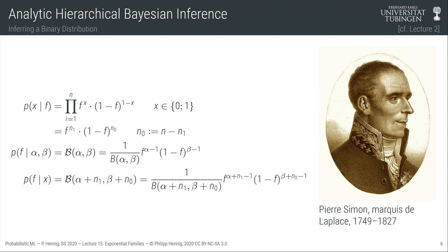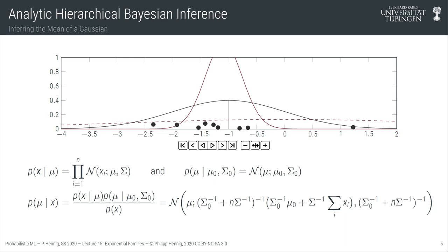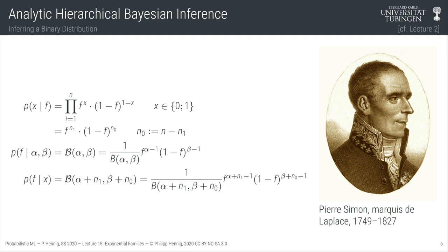It turns out this is not the only case in which such conjugate priors exist. The Gaussian inference framework is another situation where we have a prior such that multiplying prior by likelihood gives a posterior that looks like the prior — here both happened to be Gaussian. In the beta case, the prior and likelihood look conceptually similar but are different: this is a distribution over x and that is a distribution over f, so as a function of f these objects look quite different.